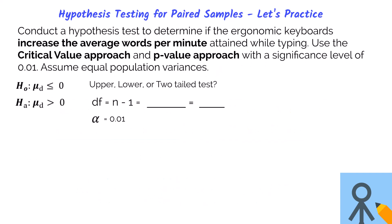The problem then asks us to conduct a hypothesis test to determine if the ergonomic keyboards increase the average words per minute attained while typing. We are going to use both the critical value approach and the p-value approach with a significance level of 0.01. You are going to assume that equal population variances. This example problem is like the hypothesis test I would be interested in if I implemented a pre- and post-class statistics test. I would be interested in knowing if after taking the class did your test scores improve? Here we are also interested in seeing if there was an increase in the average words per minute. So the null hypothesis is the mean difference is less than or equal to 0 and the alternative is greater than 0. The context clue here is the increase in the average words per minute for the ergonomic keyboards. This tells us we are working with a one-tailed upper test. The alpha is given to us as 0.01.